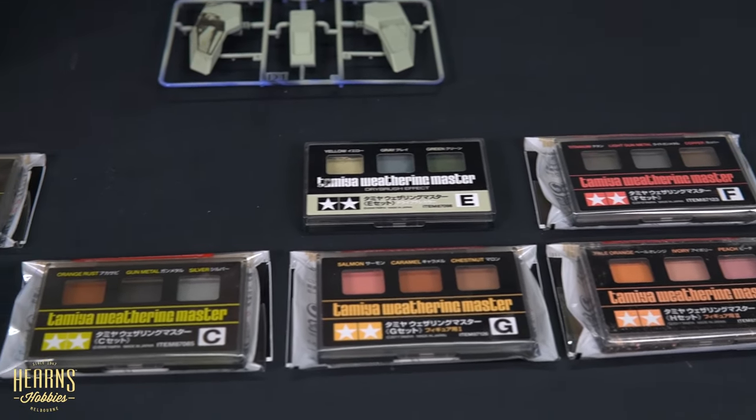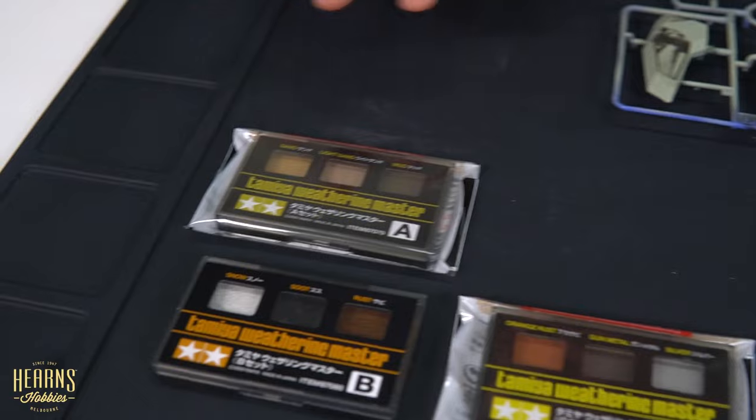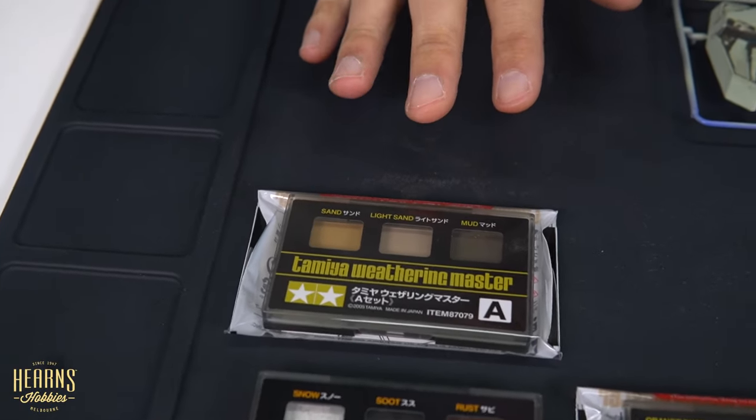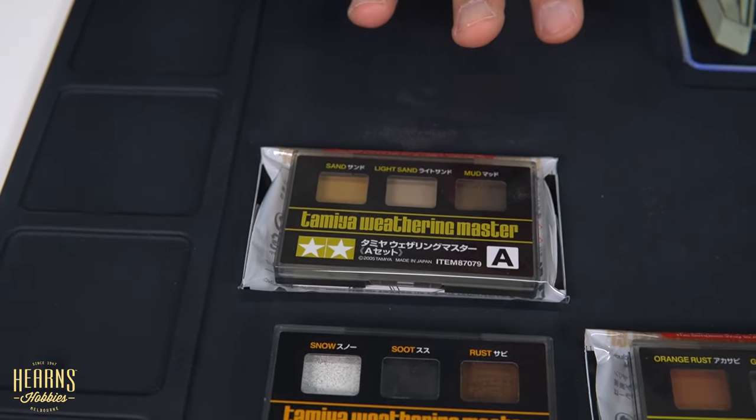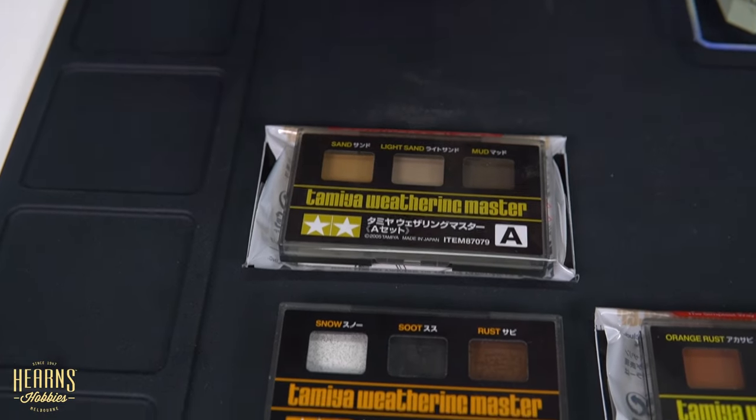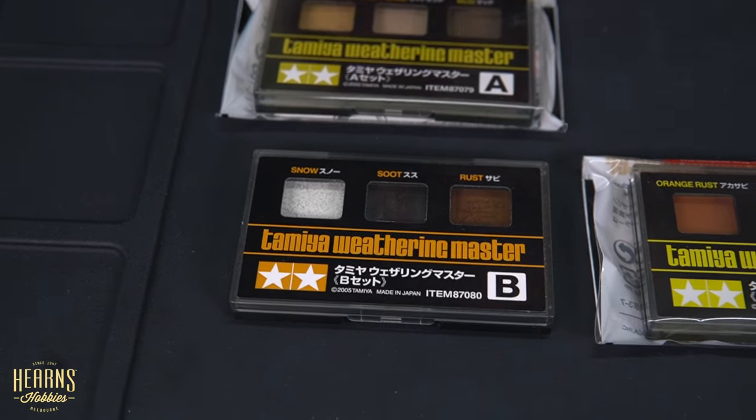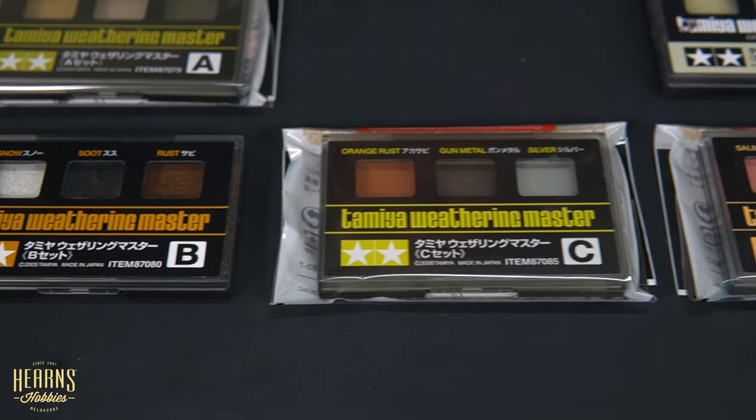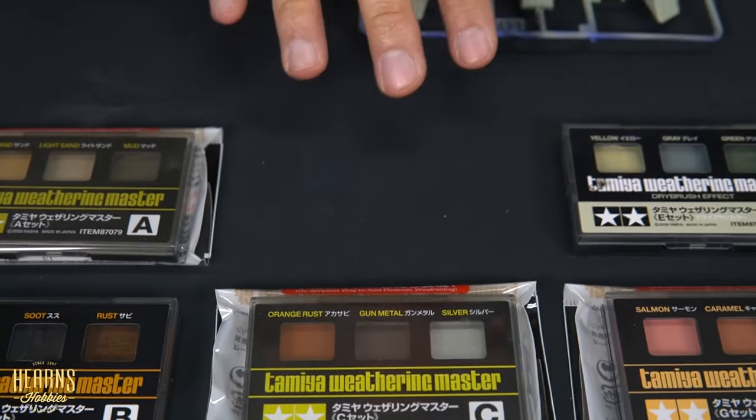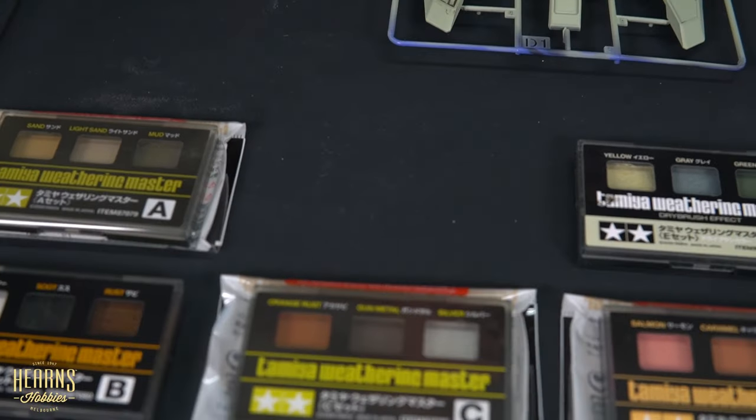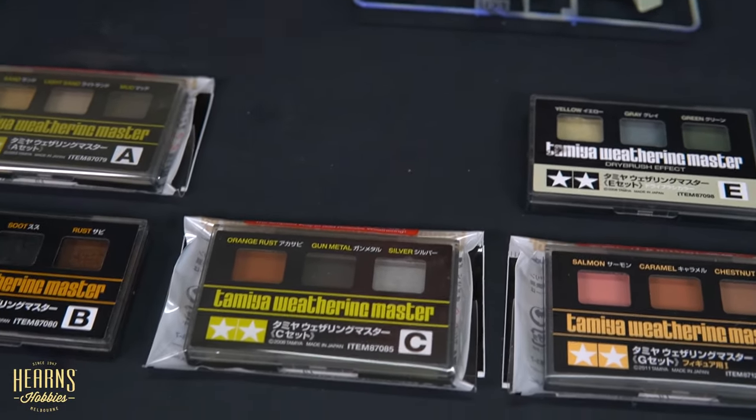The A set has the dirt type effects - sand, light sand, and mud. The B set has snow, soot, and rust. The D set, which is missing, has burnt blue, burnt red, and oil stains, which is quite good for using on exhaust and engine details.